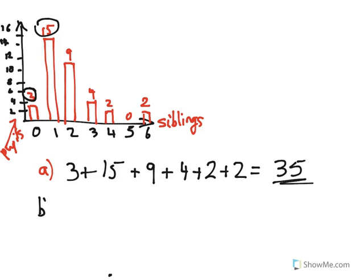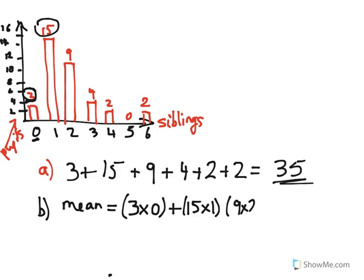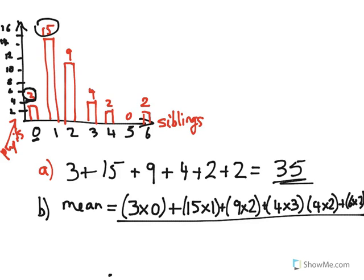Now we calculate the mean. We take each value and multiply the number of people by the number of siblings. We had three people with zero siblings, fifteen with one, nine with two, four with three, two with four, and zero with five and six. We add all those products together and divide by 35, the total number of pupils.